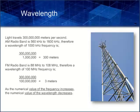The FM radio band is 88 megahertz to 108 megahertz. Therefore, a wavelength at 100 megahertz frequency is the speed of light divided by 100,000,000, which equals 3 meters. As the numerical value of the frequency increases, the numerical value of the wavelength decreases.